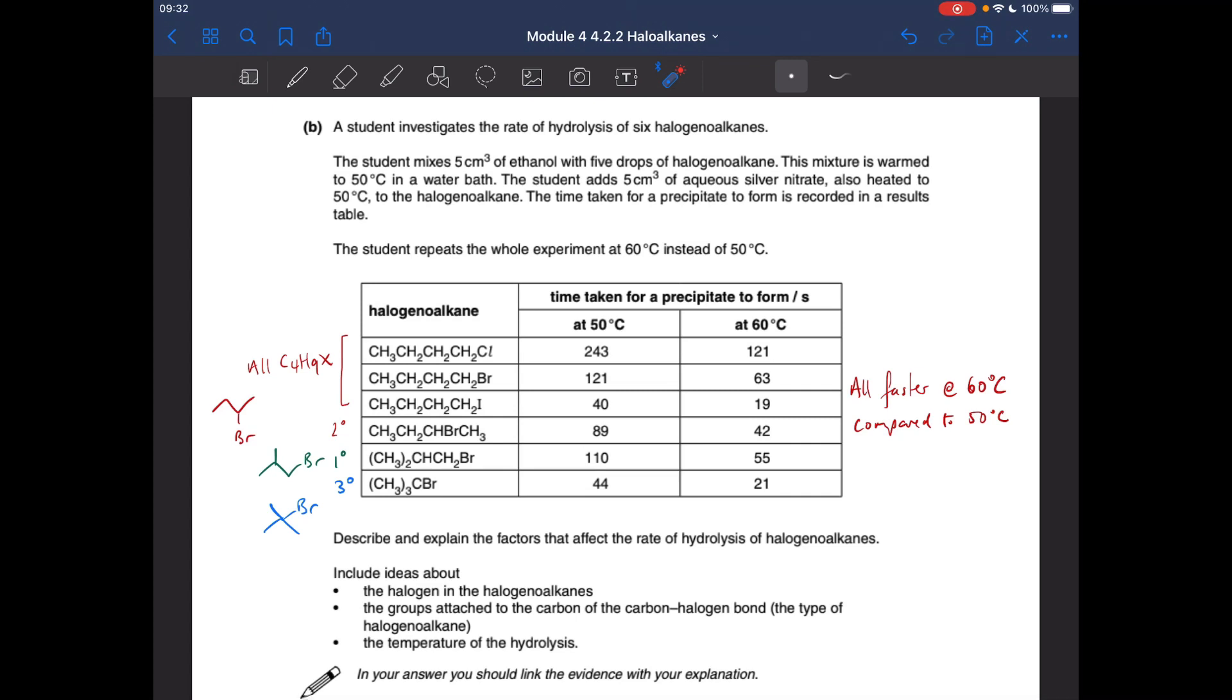So we'll deal with the first bullet point. We're going to look at these three results here because these are all straight chain halogenoalkanes, they're not branched, they all have the formula C4H9 halogen. So these are going to show the effect of the halogen in the halogenoalkane. And you can see from the times that the iodoalkane is hydrolyzed the fastest, then the bromo and the chloro one's hydrolyzed the slowest, it takes the longest to hydrolyze.